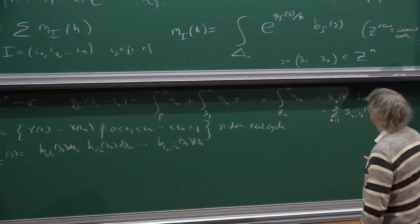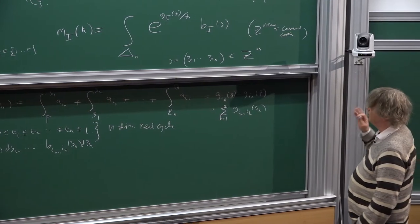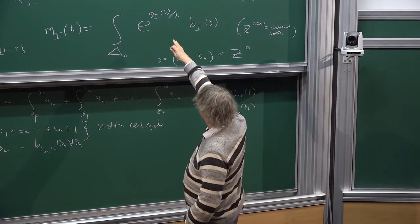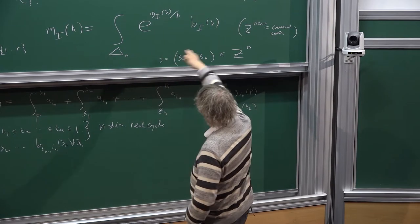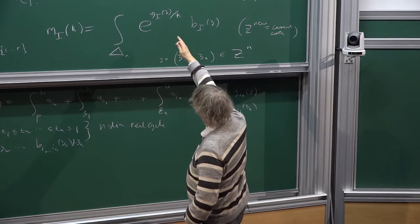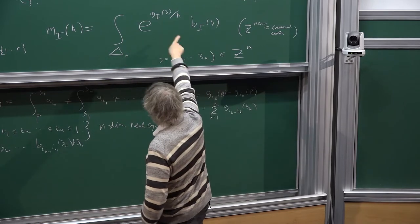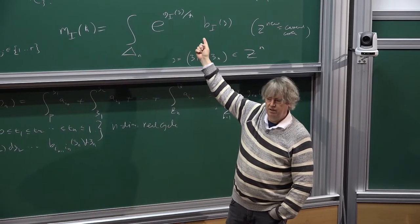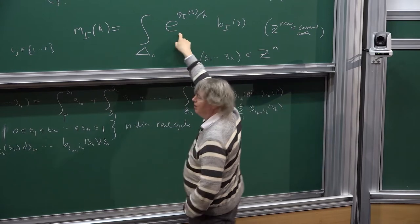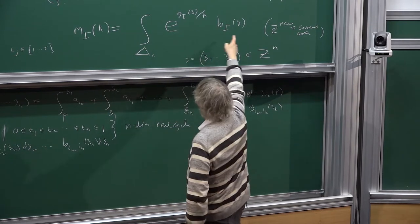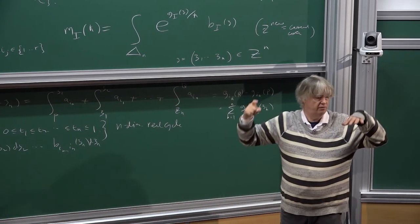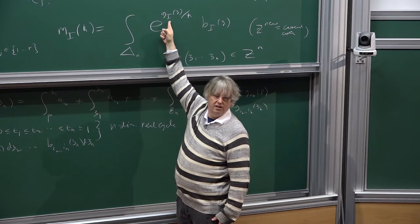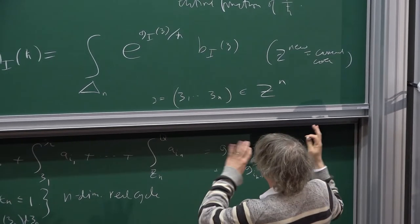Before going to the Borel plane, the main point is we would like to apply some kind of saddle point or steepest descent method for this integral. That basically means we want to move the cycle, because this integral is independent of the choice of cycle since it's an integral of a holomorphic closed form. We try to move the cycle of integration so as to minimize the real part of this function G.